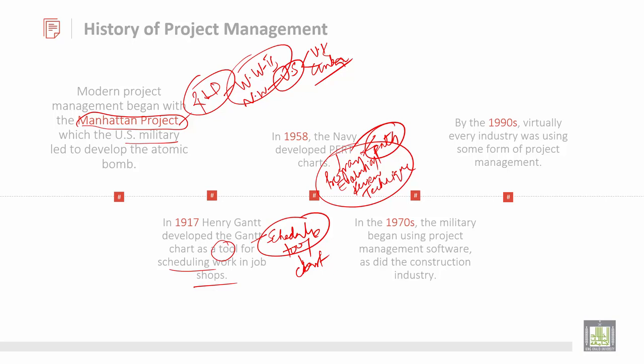In 1970, the military began using project management software in defense and construction. Famous software examples include ProofHub, SCORO, and Basecamp. Then by 1990, virtually every industry was using some form of project management — virtually meaning almost everyone was using this concept.